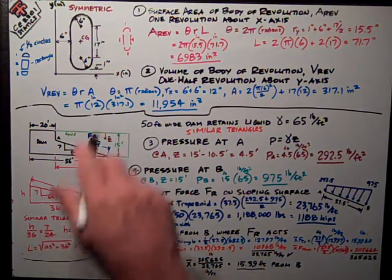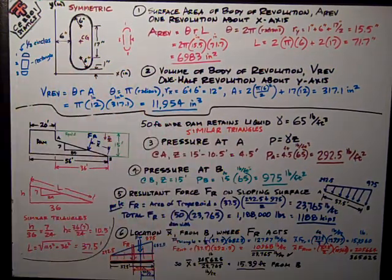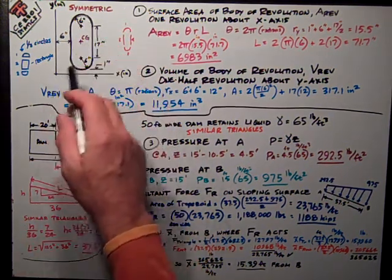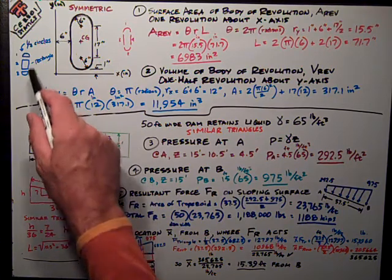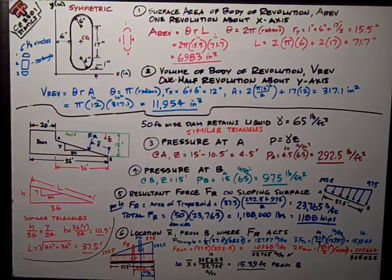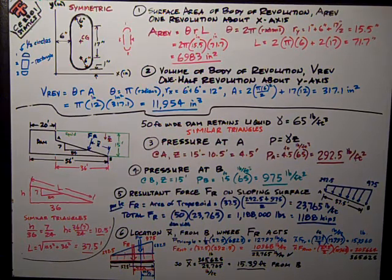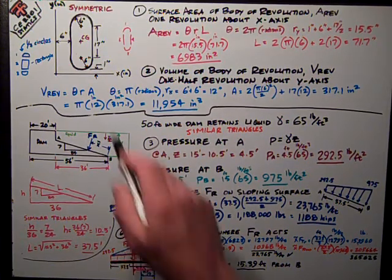Problem number one, shown up here on the top half of the board, is a symmetric shape composed of two half circles on top of a rectangle. And that's key to making the solution a lot faster. Knowing that it's symmetric, we know that the center of gravity is right here in the middle of it.